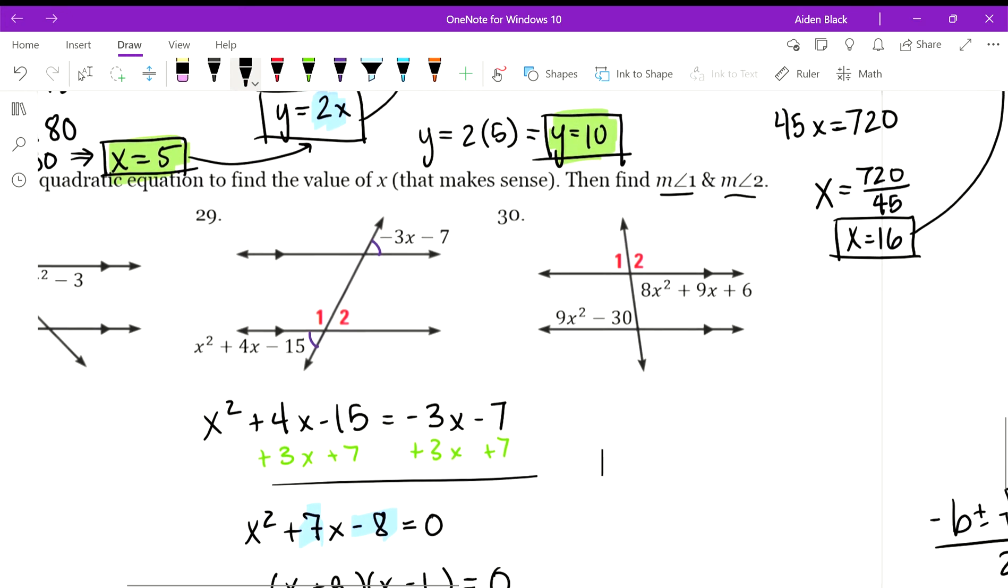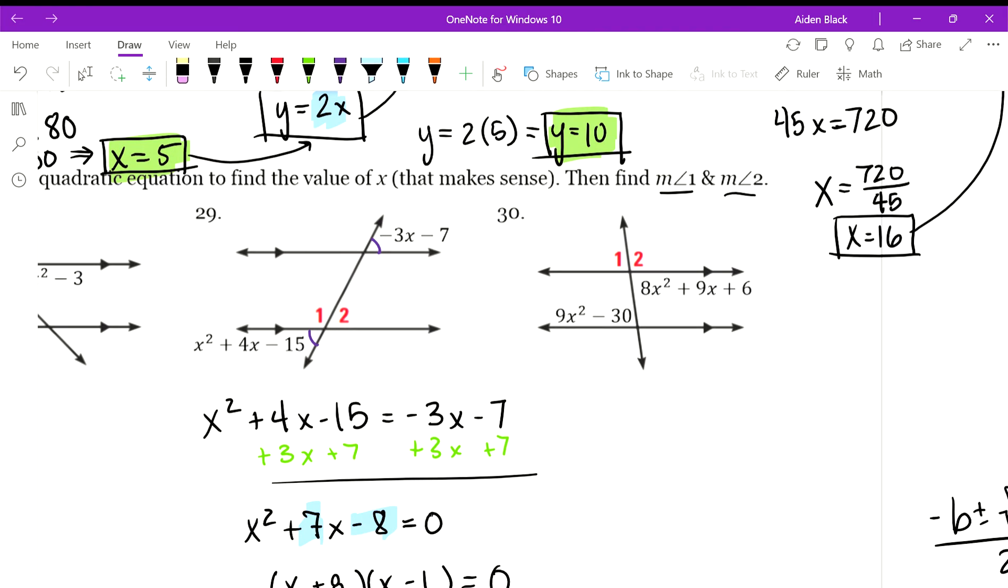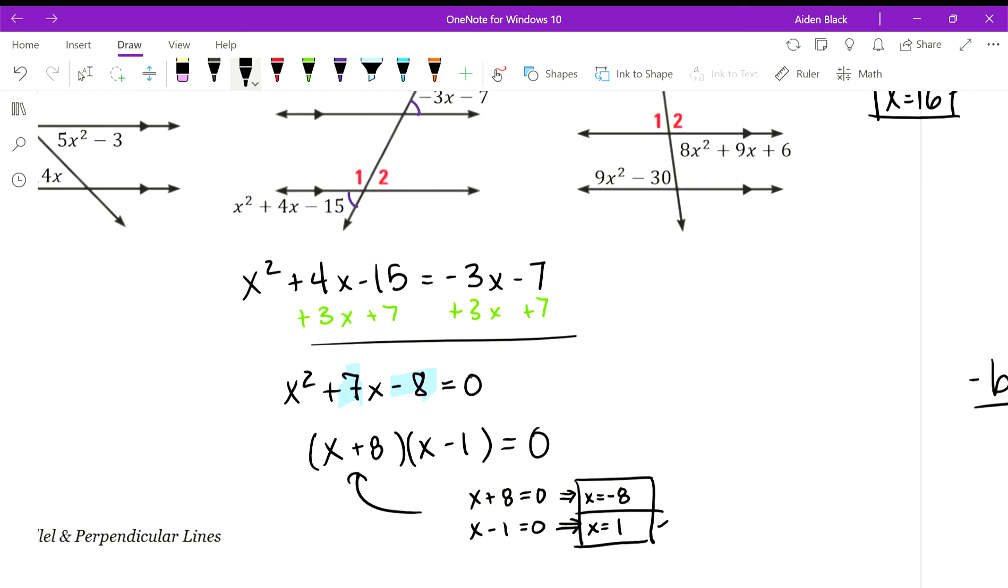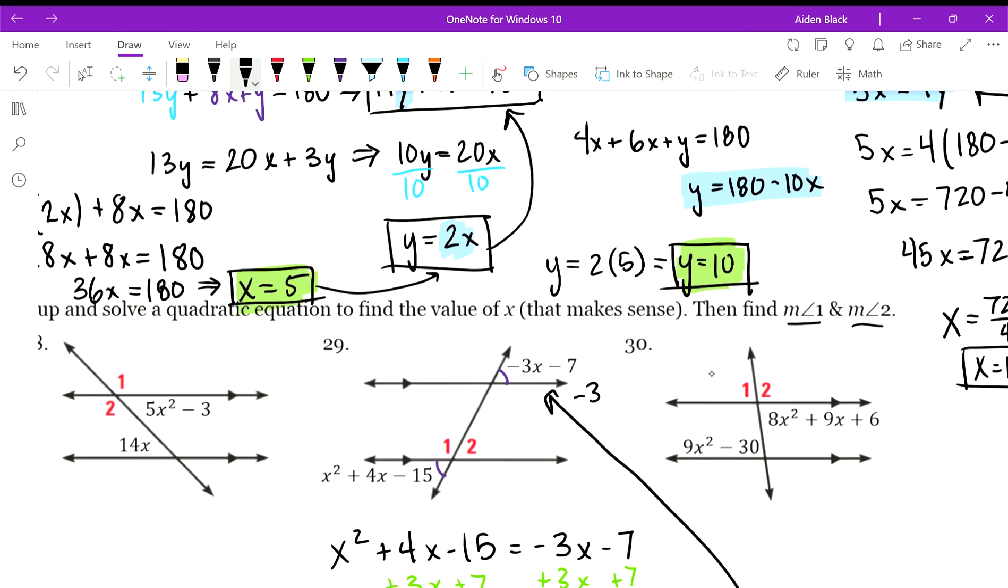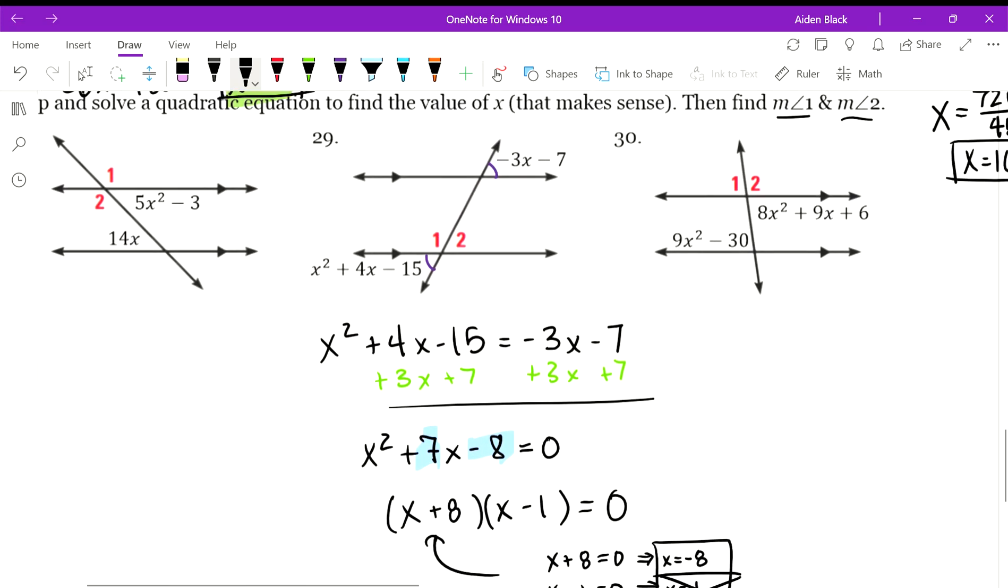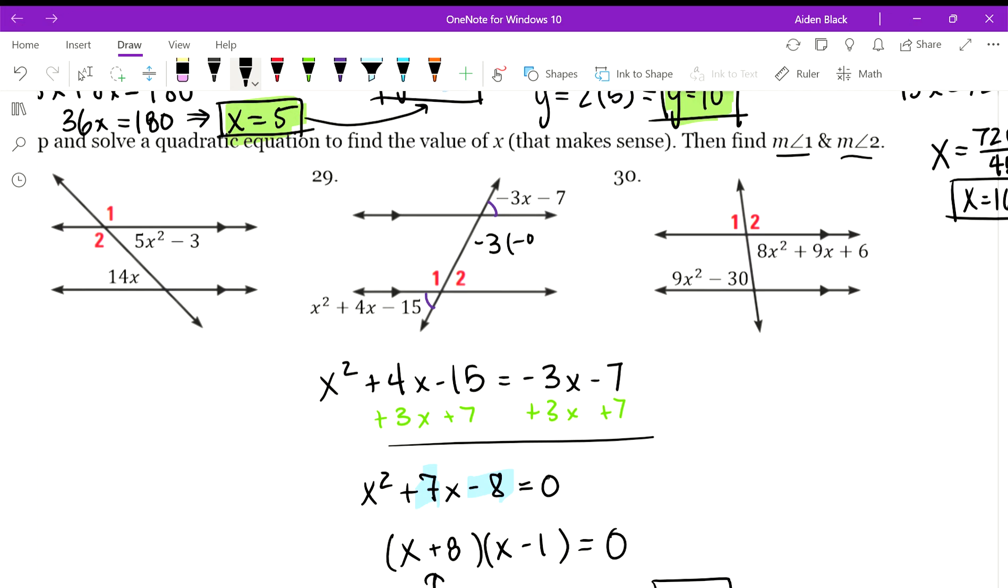So we found out what values of x work for our quadratic equation, but now we need to see which ones make sense. One seems simple enough, let's plug it in though. -3 times 1 minus 7 gives us -10, and since we haven't dealt with negative degrees yet, x equaling positive 1 does not make sense. On the other hand, if we plug in -8, we get negative 24 minus 7, sorry, positive 24 minus 7, which would be positive 17.